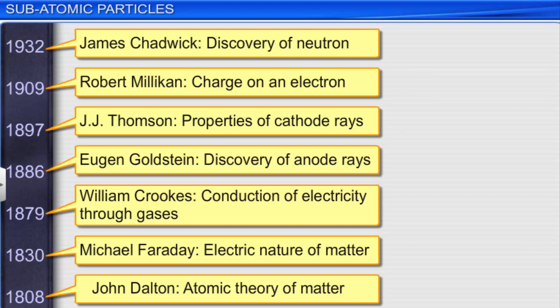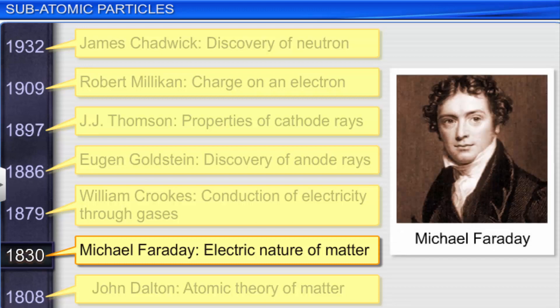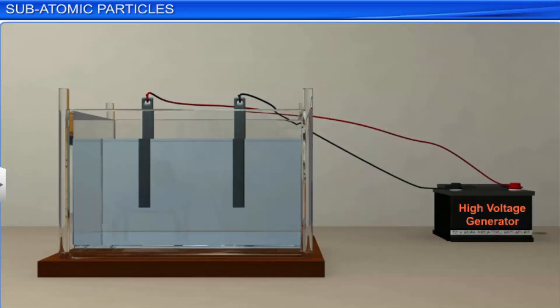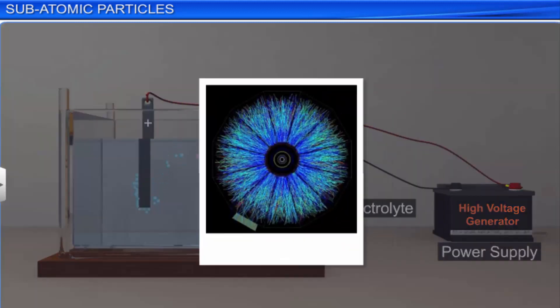For example, it could not explain the electric nature of matter as explained by Michael Faraday through his experiment in 1830. Faraday found that when electricity is passed through an electrolyte, which is a solution that conducts electricity, chemical reactions resulting in the deposition of matter at the electrodes take place. This experiment proved that electricity consists of charged particles, which in turn indicated the electric nature of matter.